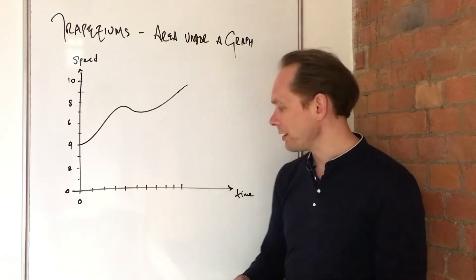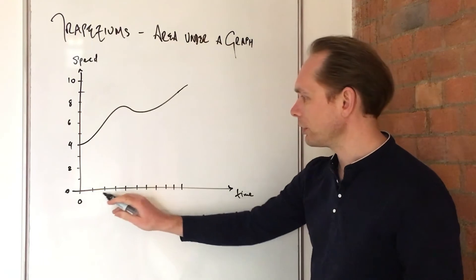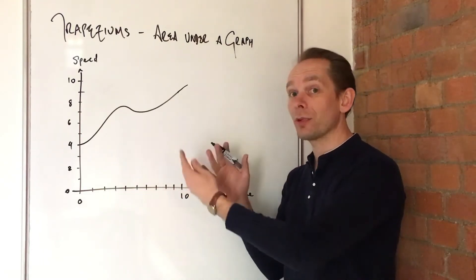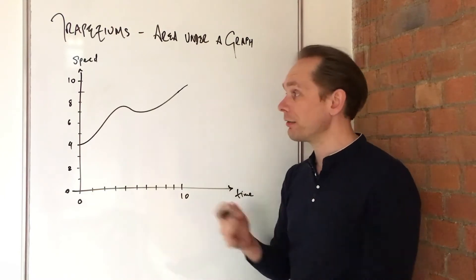And we might be interested to know how far has it travelled in this one, two, three, four, I think that's 10 seconds. So how far has it travelled? Well, that's the area under the graph. And how are you going to find that?